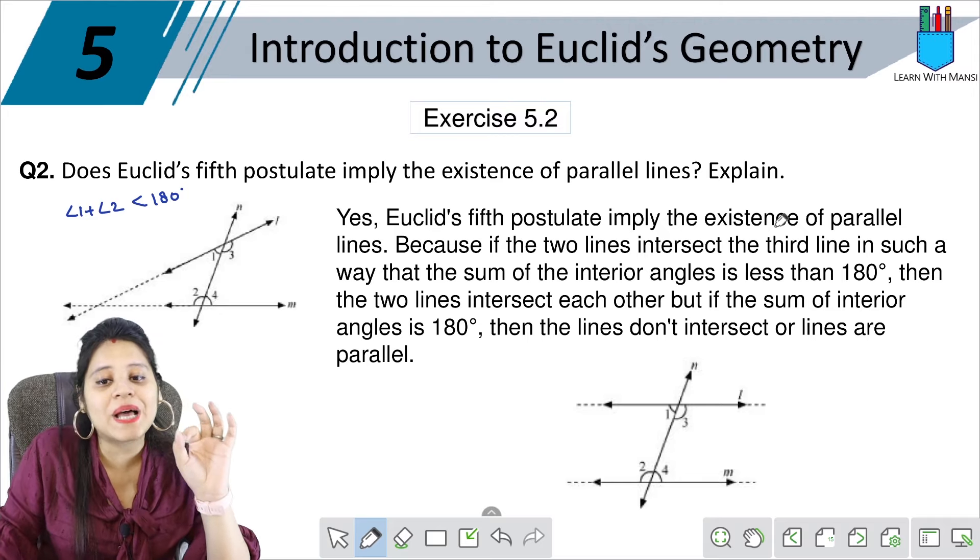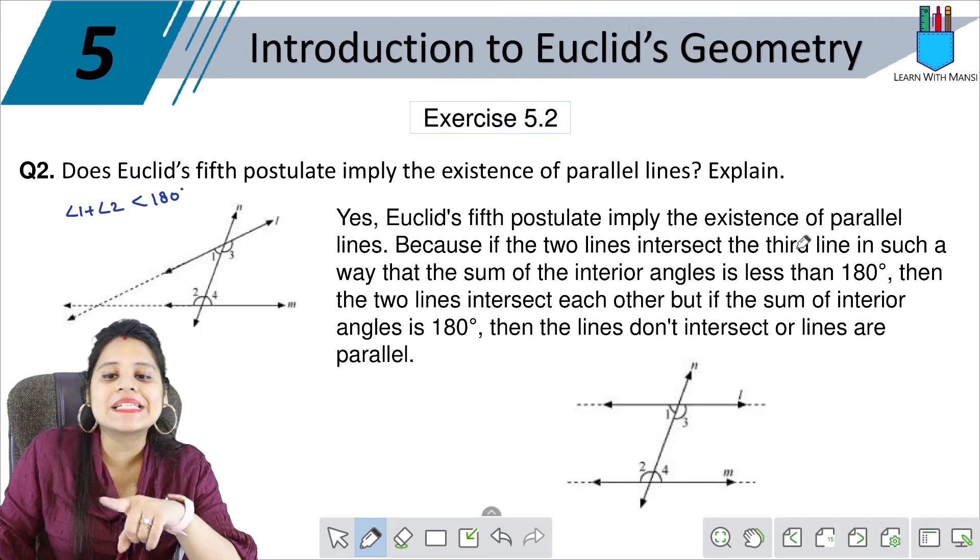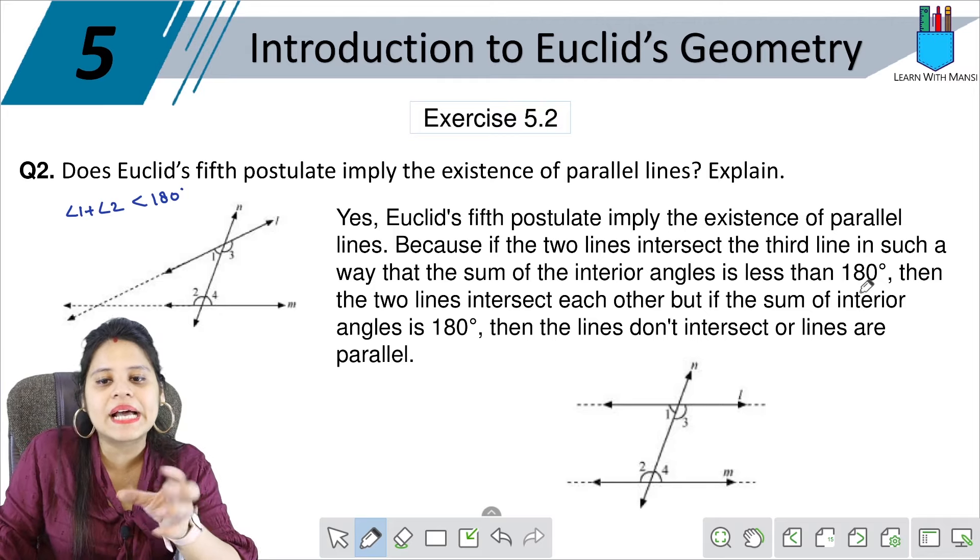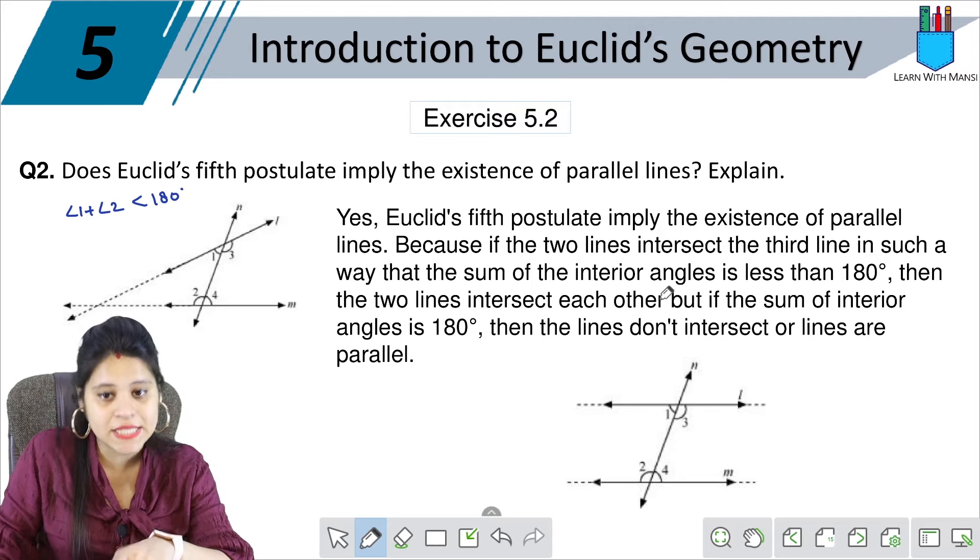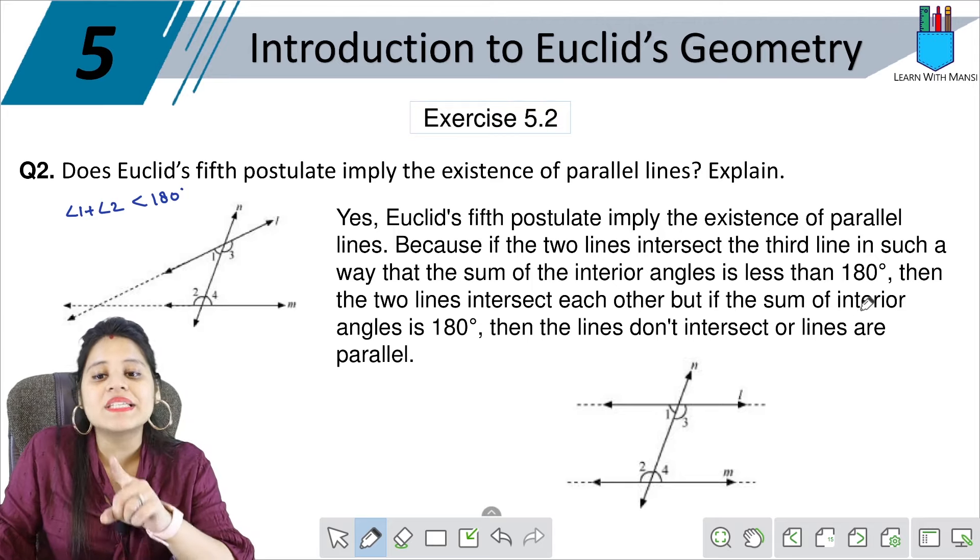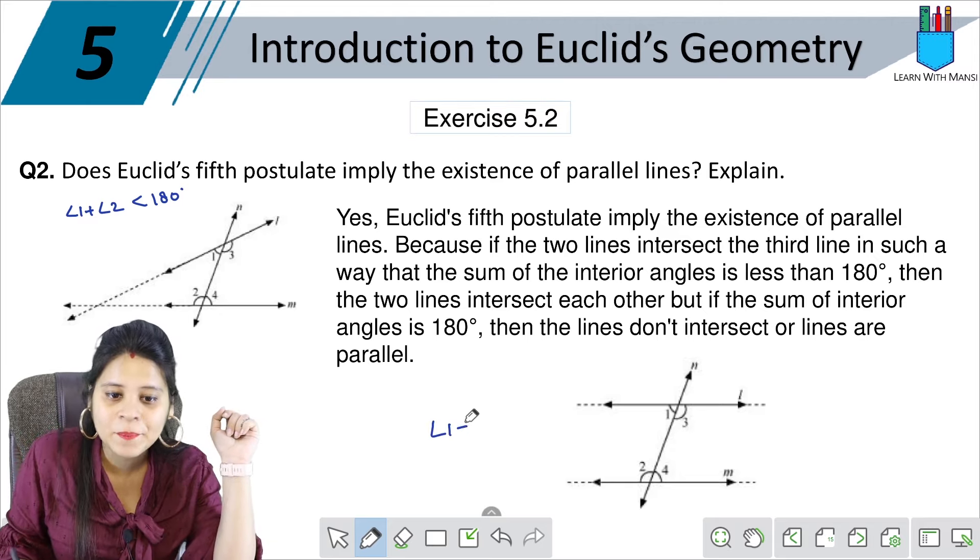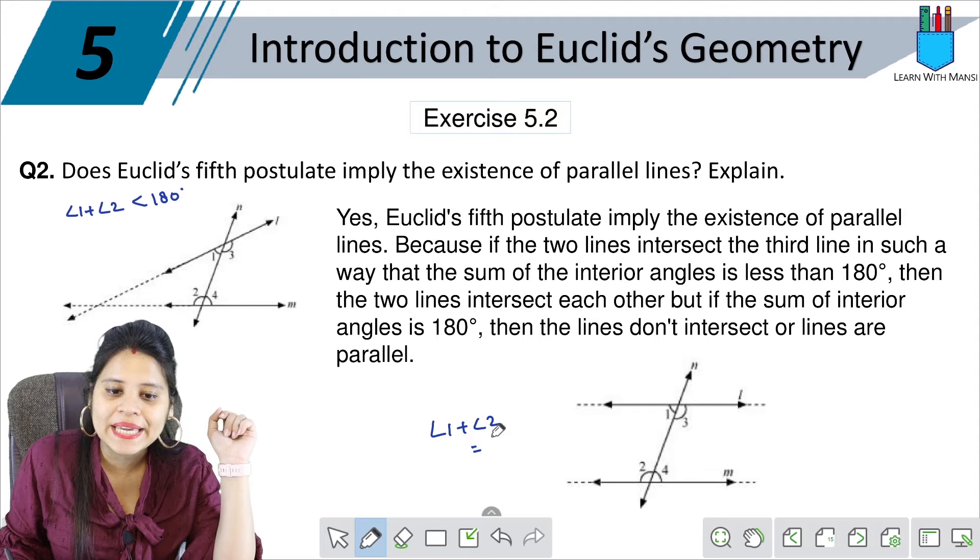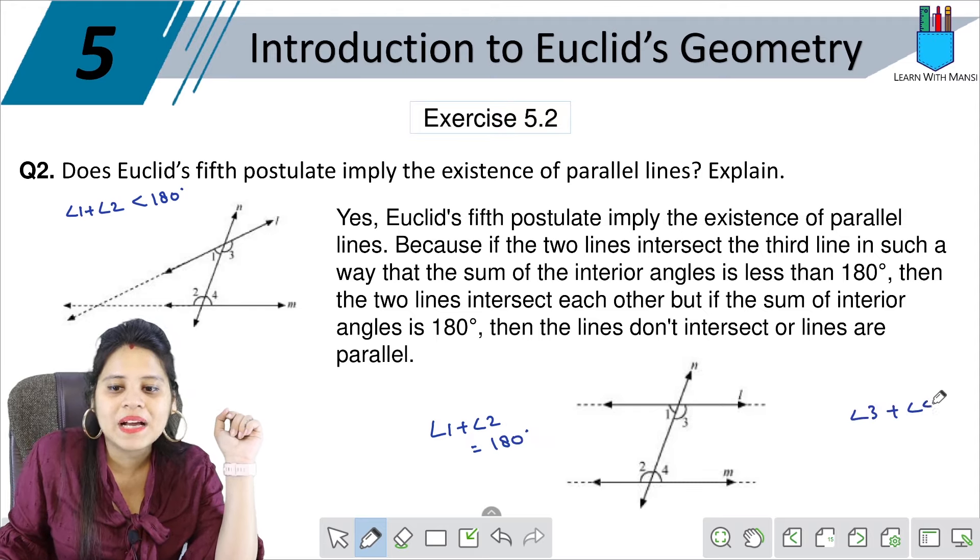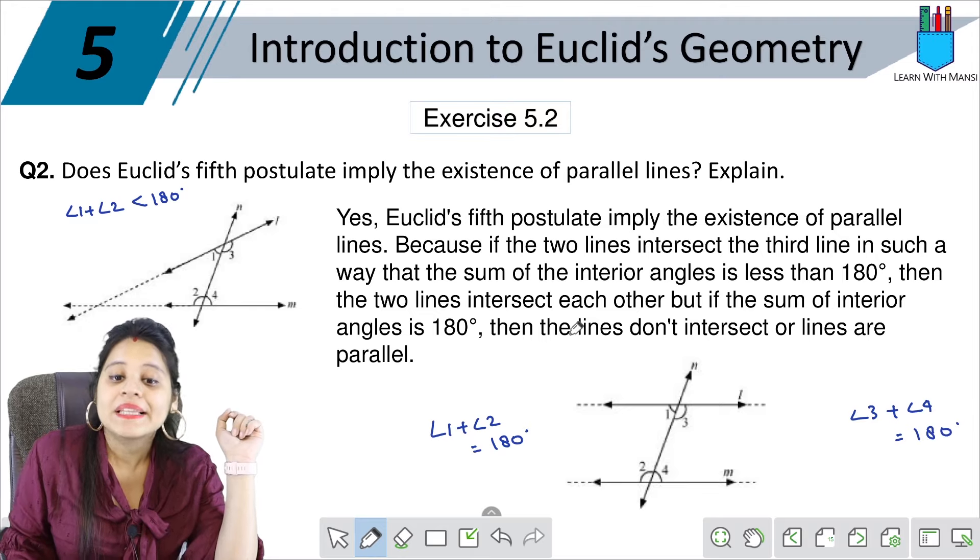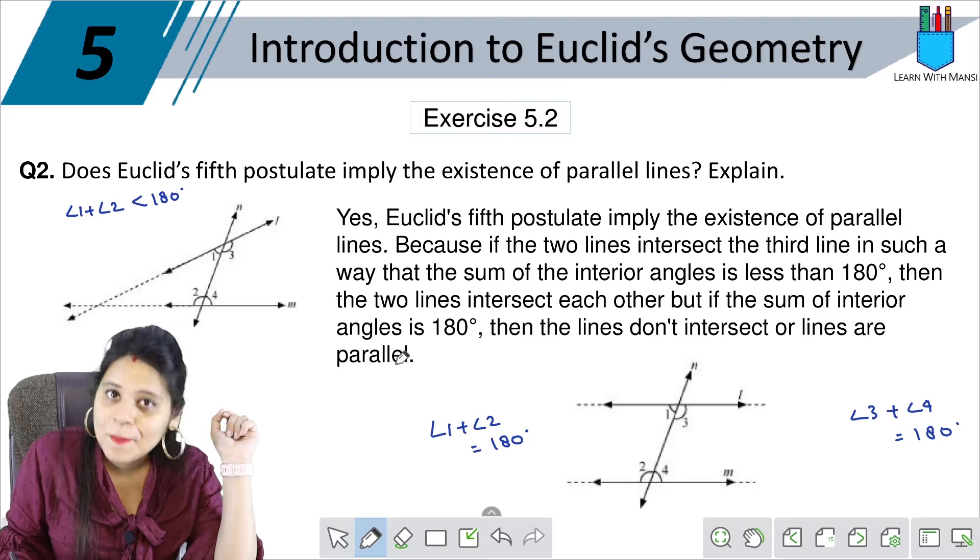Yes, Euclid's fifth postulate implies the existence of parallel lines because if the two lines intersect the third line in such a way that the sum of their interior angle is less than 180, then the two lines intersect each other. But if the sum of interior angle is 180 degrees, if this angle one plus angle two is equal to 180 degrees or angle three plus angle four is equal to 180 degrees, then the lines don't intersect and the lines are parallel.